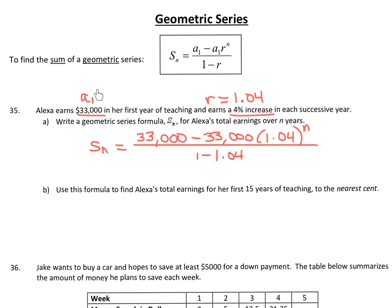When you got this question, they said this was her salary in her first year, so this is A sub 1. I replaced A sub 1 in the formula with $33,000. Don't be tricked — she's earning a 4% increase. Since this is an increase, we're not multiplying by 0.04, because that would make the numbers go down. A 4% increase means 1 plus 4%, so 1.04. That's what I substituted in for R. They wanted you to leave it in terms of N, so I left this as N.